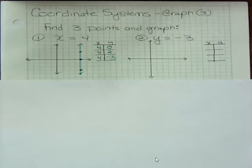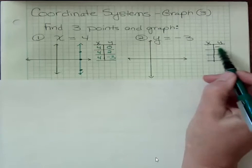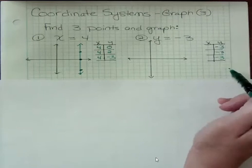If x equals some number, you get a vertical line at that number. So what do you think happens when y equals a number like negative 3? Well, I know that y is always negative 3 because that's the only information I got, so I know that part.